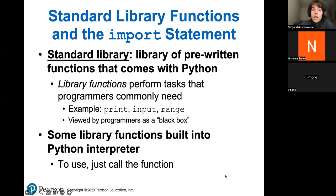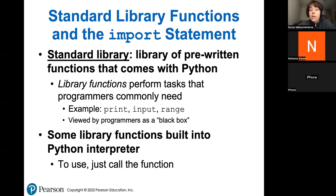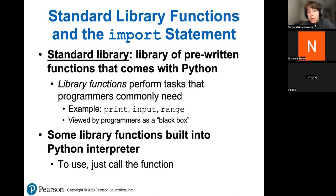Standard library functions are basically all of those functions that are already written for you — you do not have to define them. In Python, the ones we already used are print, input, and range. Those are called standard library functions because they are in the library of your Python language. They perform tasks that everybody needs when working with code, such as displaying something on your monitor, taking input from the user, reading it from the keyboard, or with range, giving you a range of numbers that you specify.